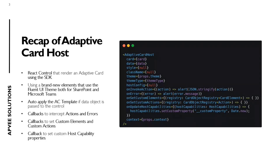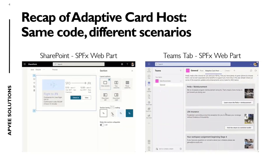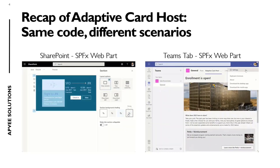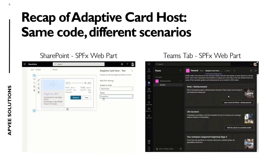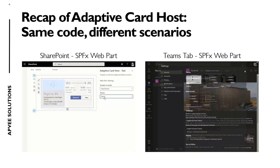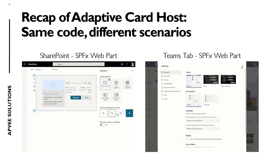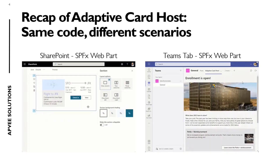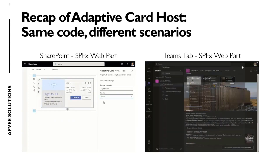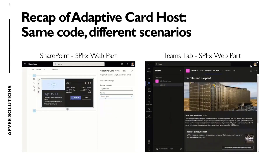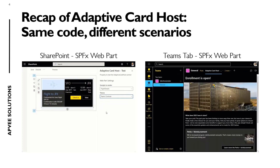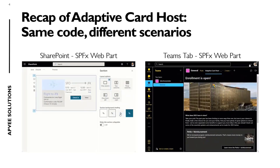For example, the SubmitAction, OnError, or OnSetCustomElement and OnSetCustomAction to add more controls inside this Adaptive Card host. This shows two samples of the same web part rendered inside a SharePoint page or inside a Teams tab. A cool feature is the custom theme support for three kinds of themes: light, dark, and high contrast. We are able to render the Adaptive Card correctly with the same look and feel matching those themes.